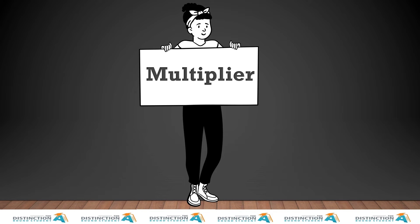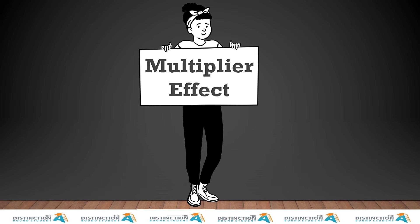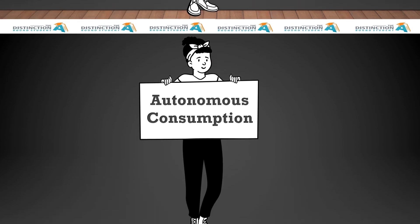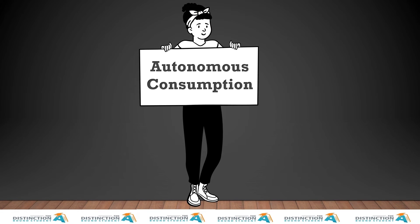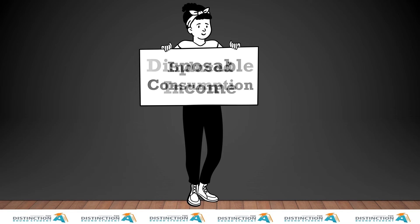A multiplier refers to an economic factor that, when applied, amplifies the effect of some other outcome. The multiplier effect is described as a situation when a small change in spending causes a disproportionate change in aggregate demand and hence in the level of aggregate income. Autonomous consumption is the portion of household spending which is independent of income. Induced consumption is consumption made with disposable income. Disposable income is the portion of income available to an income earner after all income taxes are deducted.